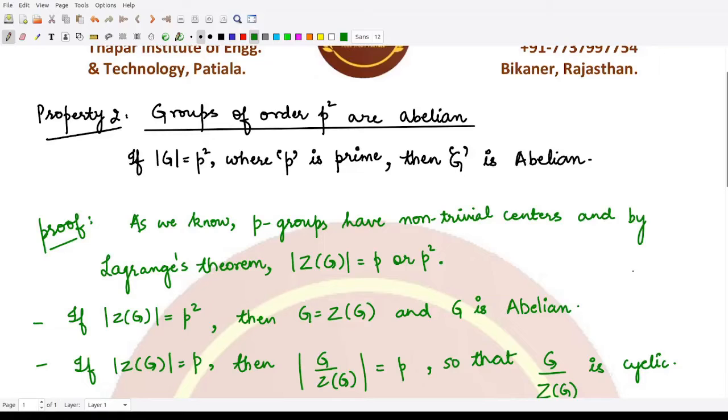Hello everyone, welcome to this video. In this video we shall be looking at the proof of this property which tells us that if a group has order prime squared, then that group is abelian. So we assume first of all that the given group G has order p², and we need to prove that it is abelian.